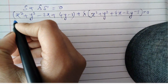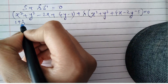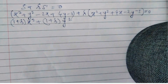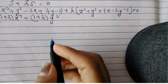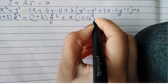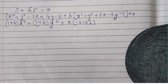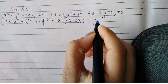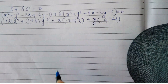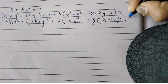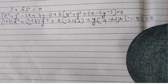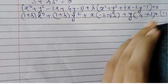Expanding this, we get: (1 + lambda)x² + (1 + lambda)y² + x(−2 + 4lambda) + y(4 − 2lambda) − 1 − 5lambda = 0. This is what we get on expansion.